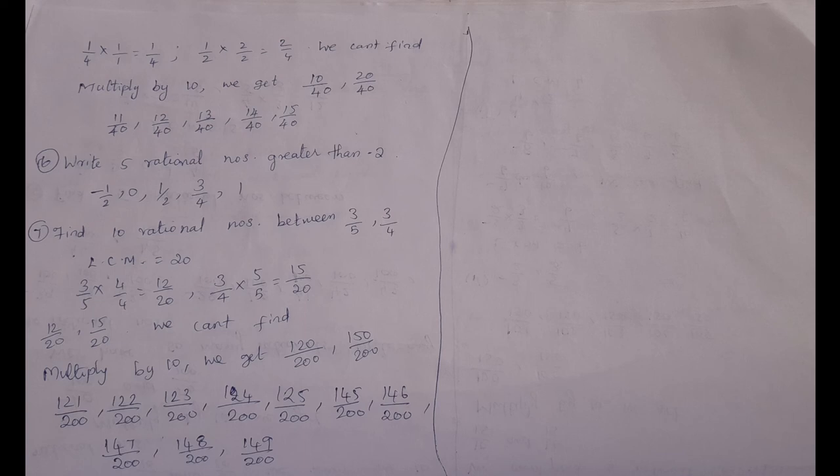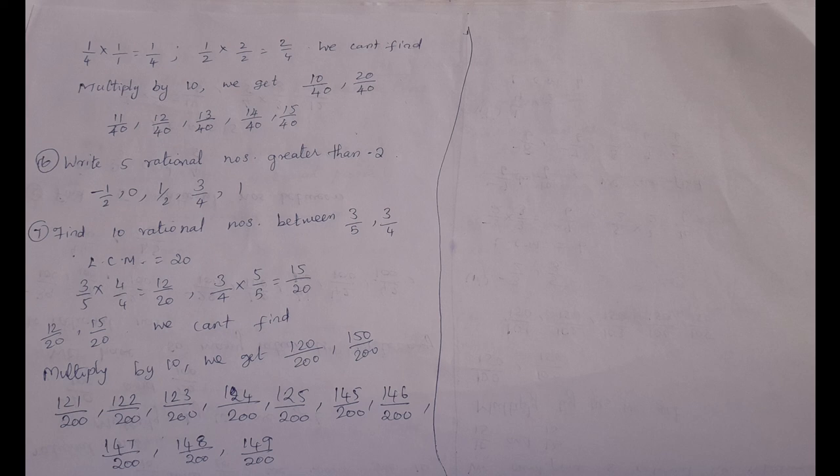Seventh and last sum: find 10 rational numbers between 3 by 5 and 3 by 4. Taking LCM equal to 20, we get 12 by 20 and 15 by 20. We can't find 10 rational numbers directly, so multiply by 10: giving 120 by 200 and 150 by 200. We can write any 10 rational numbers: 121 by 200, 122 by 200, 123 by 200, 124 by 200, 125 by 200, 145 by 200, 146 by 200, 147 by 200, 148 by 200, 149 by 200. Rational numbers are infinitely many.